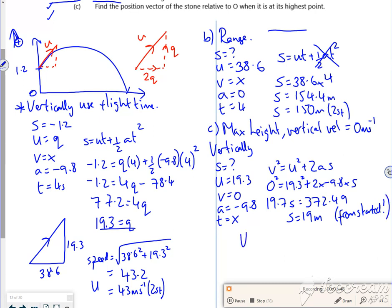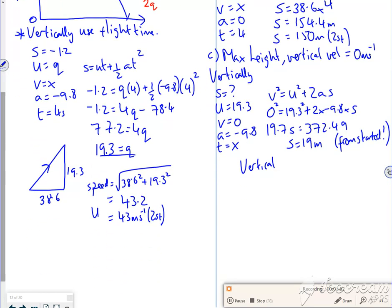So actually the vertical distance from the origin, that's going to be 19 plus the 1.2, so that's 20.2. You could use Y, couldn't you, for it?